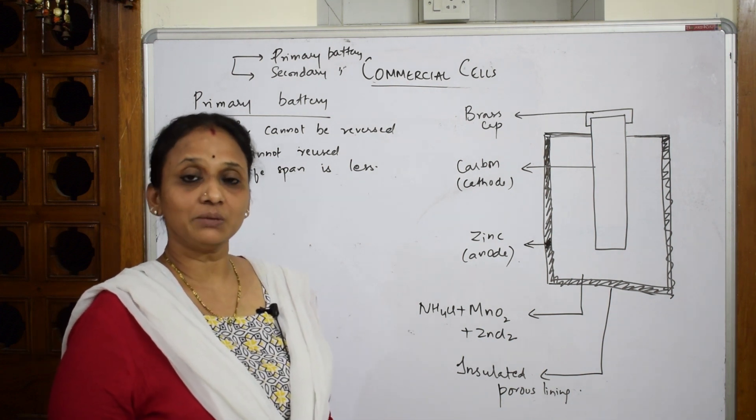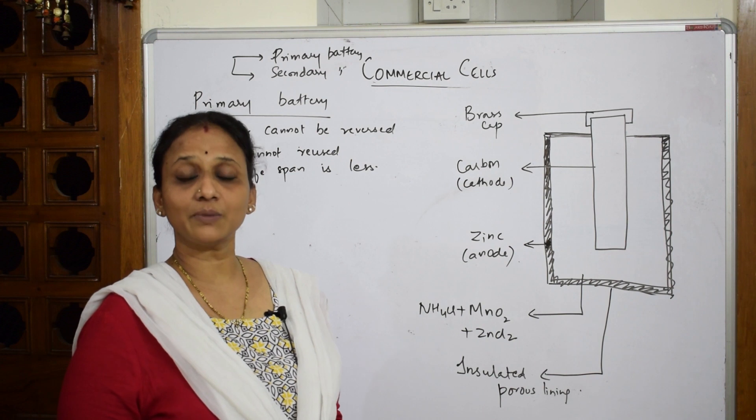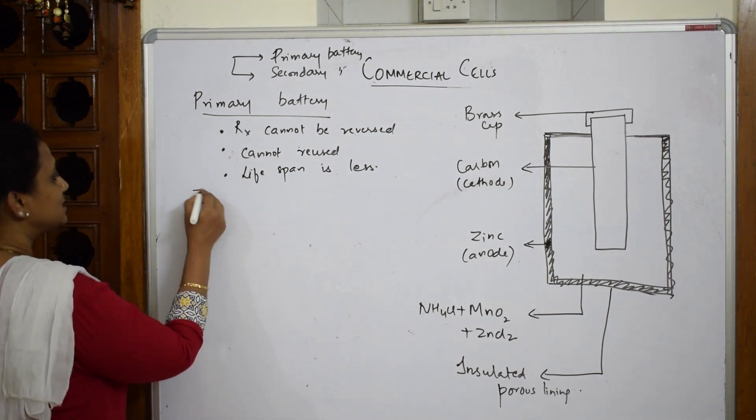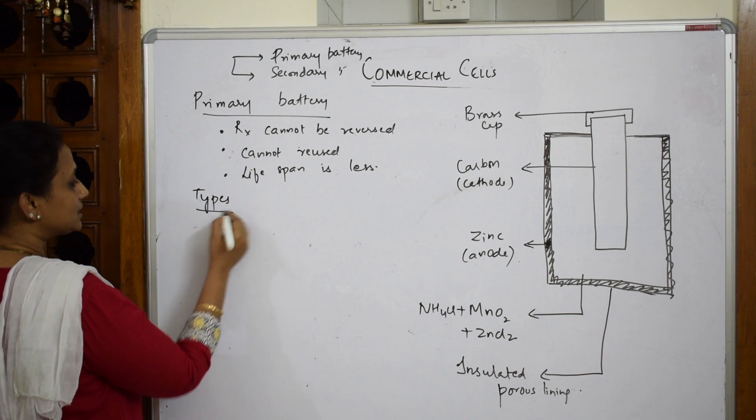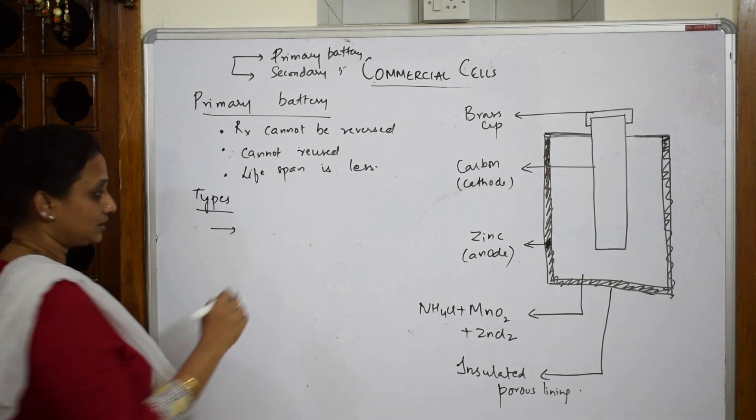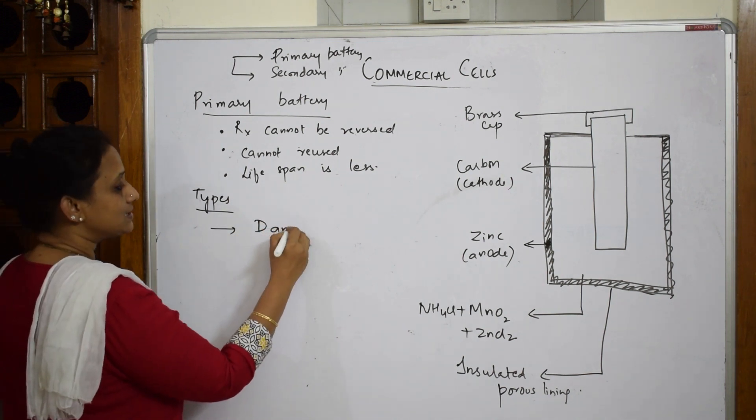For your grade 12, primary batteries are of three types which you're going to study. The first one is Daniell cell, which we have already studied.